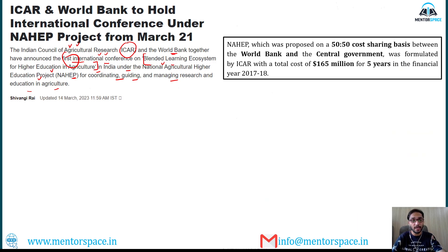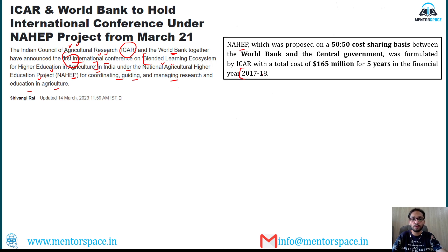NAIP stands for National Agriculture Higher Education Project, a project related to higher education in the agriculture stream. It was launched to support agriculture universities so that entrepreneurs and jobs could be developed in the agriculture sector for students of these universities. NAIP was proposed in financial year 2017-18 with a total outlay of $165 million over a five-year period.